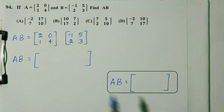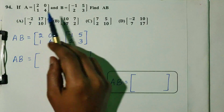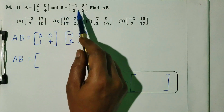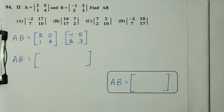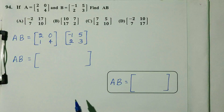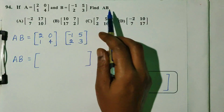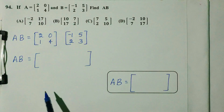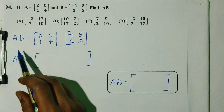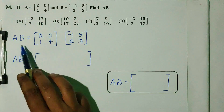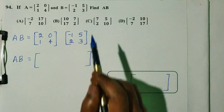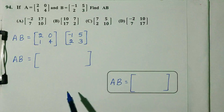Question number 94. If A is equal to [2, 0; 1, 4] and B is equal to [-1, 5; 2, 3], find A×B. A = [2, 0; 1, 4] and B = [-1, 5; 2, 3], so we will do multiplication.